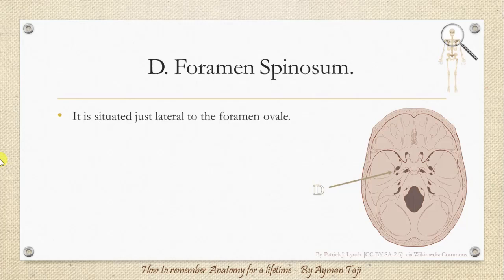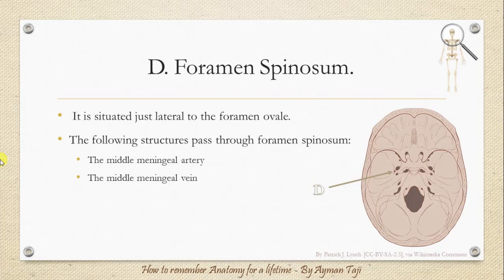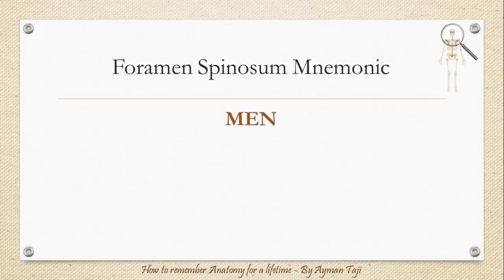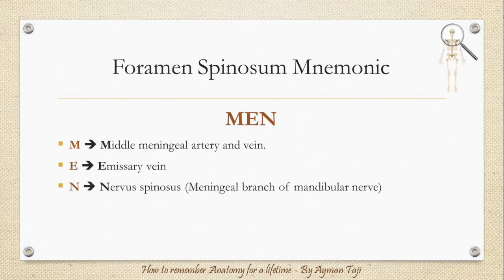The foramen spinosum is situated just lateral to the foramen ovale. The following structures pass through it: the middle meningeal artery and vein, the meningeal branch of the mandibular nerve or the nervus spinosus — a branch that supplies the dura mater — and an emissary vein. To remember them, just remember the word MAIN: M for middle meningeal artery and vein, E for emissary vein, and N for nervus spinosus.